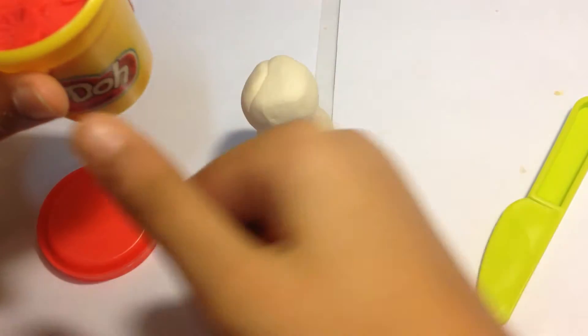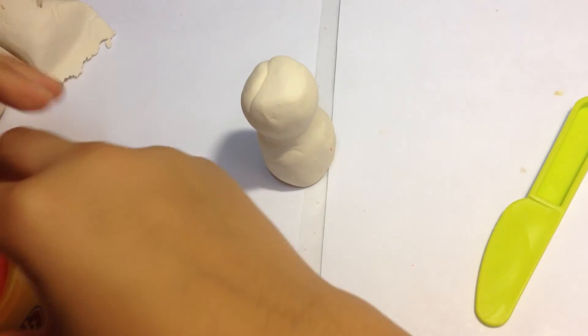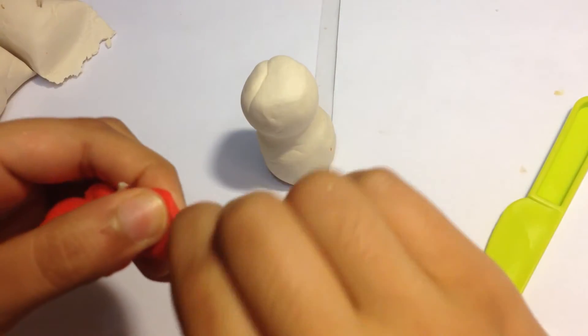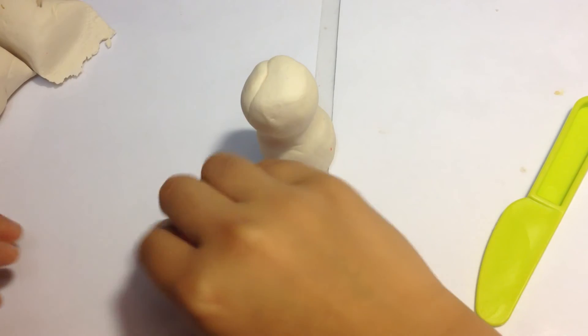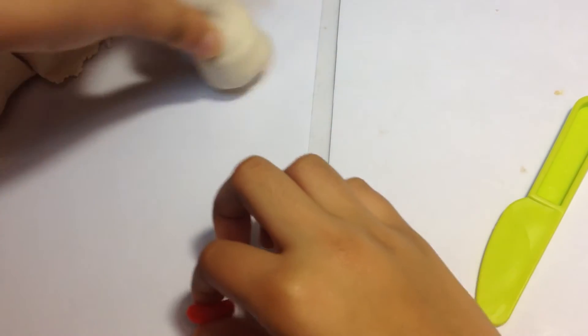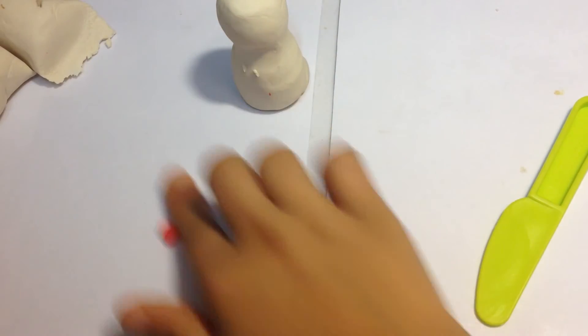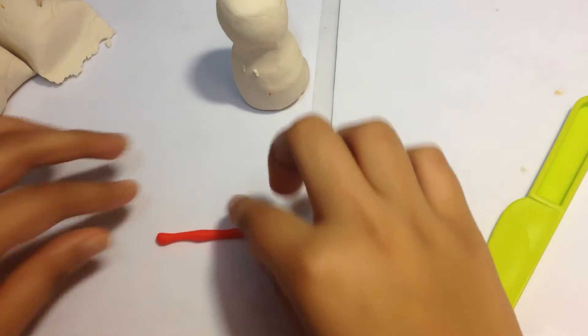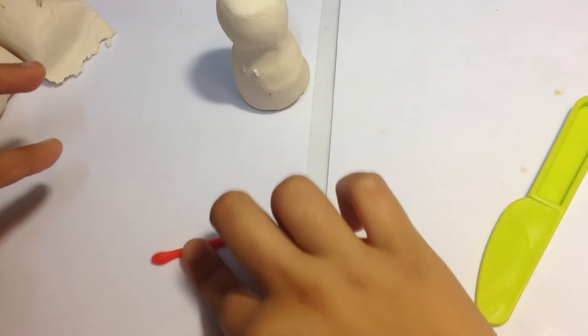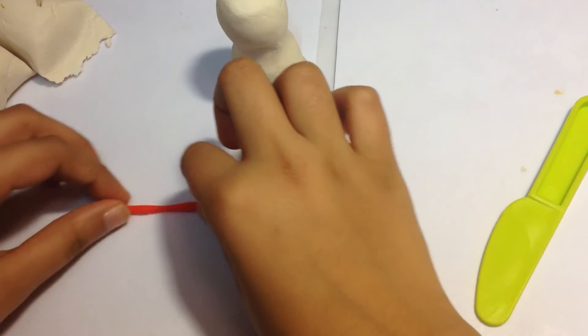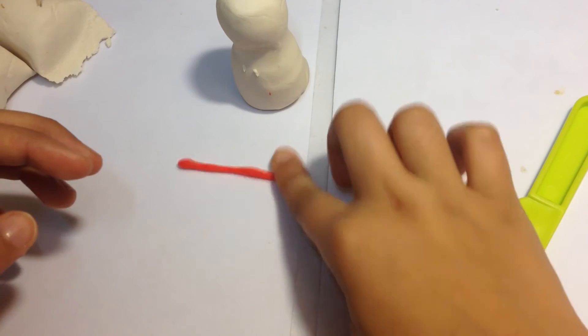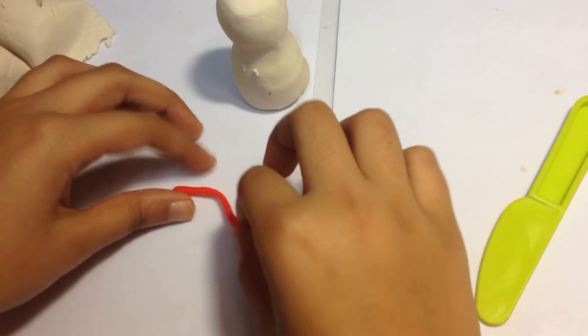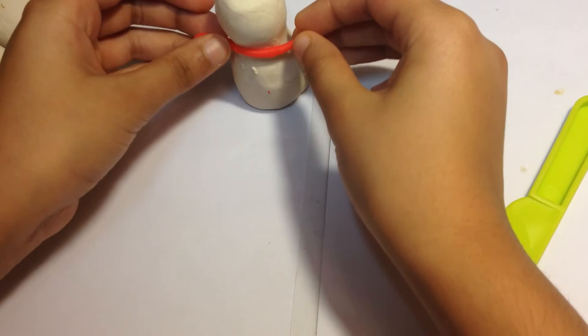I'm going to take a little bit like this. I'm just going to roll it. Then you can wrap it around like this.